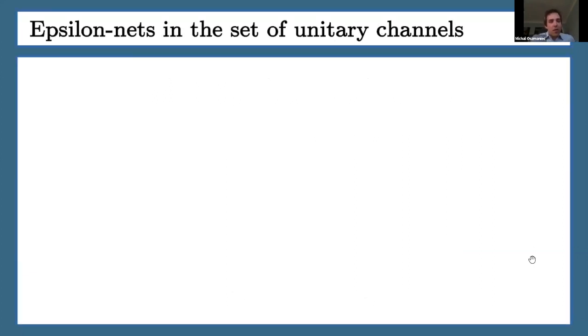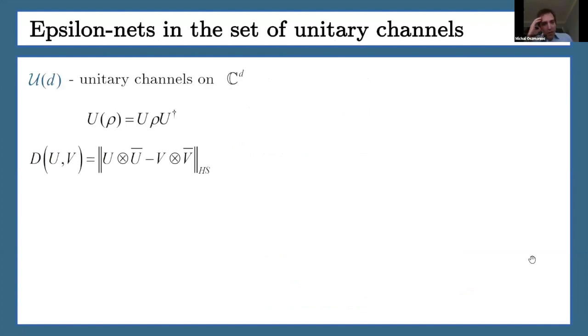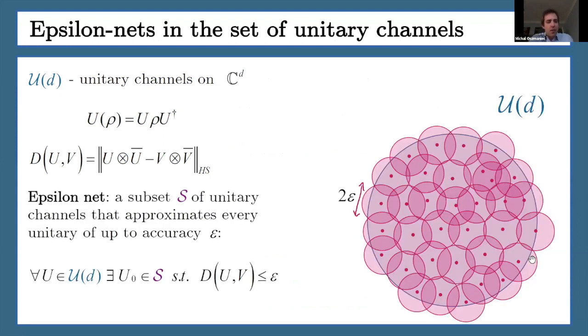Instead of defining what an epsilon net is, just take unitary channels acting on finite dimensional space. They act by conjugation by a unitary on the quantum states, and you can define a metric on this set, some measure of distance. An epsilon net is simply a subset of unitary channels, such that you can use its elements to approximate every element from the unitary group up to accuracy epsilon. You can imagine that your space is covered by balls of radius epsilon, and every point from the unitary group is within this set.